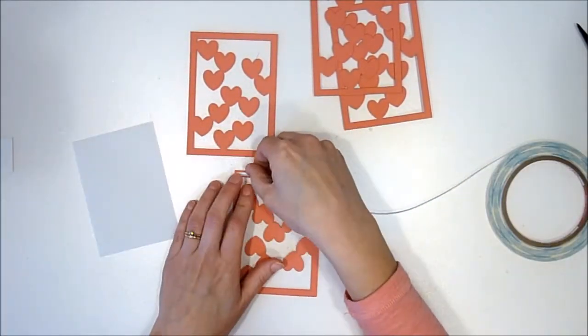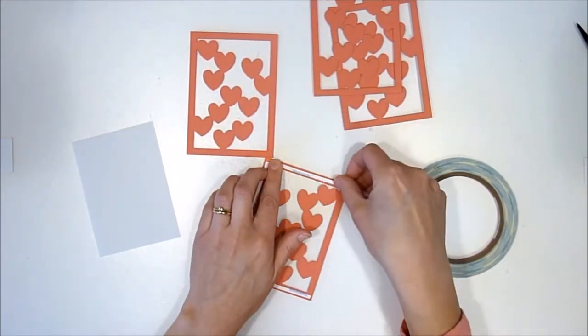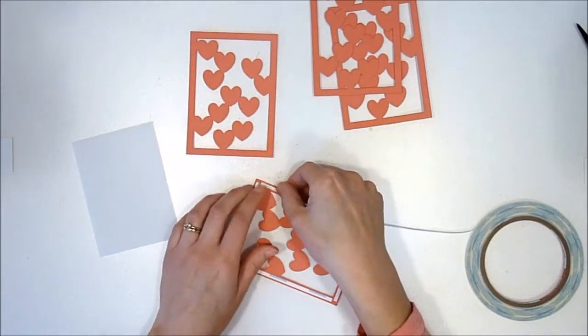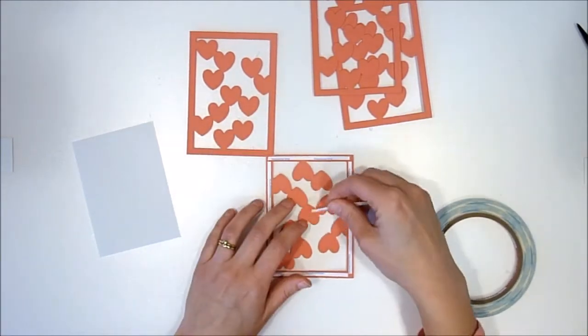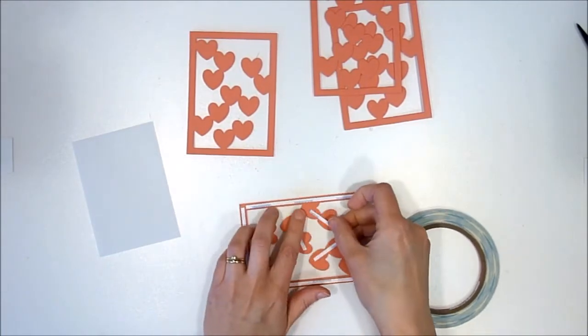I'm using some good sturdy adhesive. I like score tape—that's my personal favorite, and this is the eighth-inch. It's nice and thin, so it's the perfect size to fit here. I also threw a little tape just behind some of the hearts just to make it a little sturdier, so you don't have to worry about the hearts getting caught on something or pulling off.